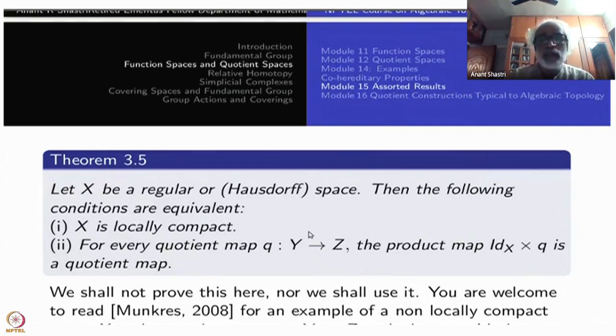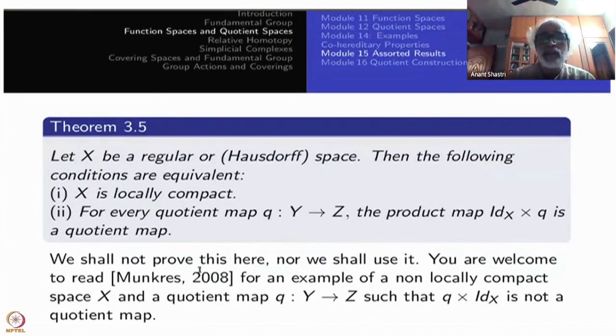So I declare that I will not go into the details here. We will not prove it here. Nor we have any use for this theorem as such. That product, one way is we need it. But the other way we will not need it. You are welcome to read the Munkres book for an example of a non locally compact space, the quotient map Q from Y to Z, such that the product is not a quotient map. But if you know this result, then reading Munkres example is redundant.